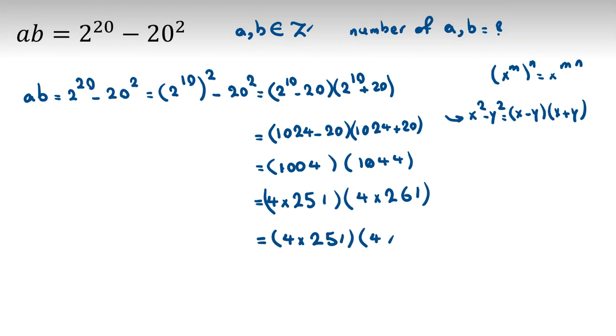If you check, 251 is prime number, but 261 is multiple of 9. You can say it is 9 times 29. If you prime factorize, 4 times 4 is 16, it's 2 to the 4. 9 is 3 squared, 29, you have power of 1, and 251.